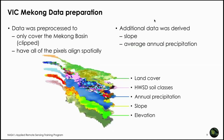Before starting the VIC model setup, note that data was preprocessed beforehand. The data was clipped to the Mekong Basin using QGIS or ArcGIS extraction tools. We ensured all pixels align spatially so each grid cell's pixels overlay perfectly. Additional derived datasets include slope from elevation data and average annual precipitation from iMERGE.